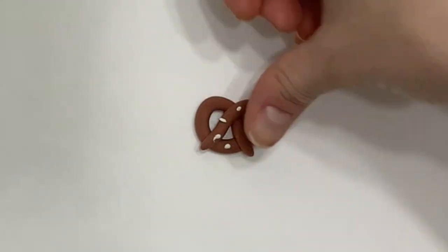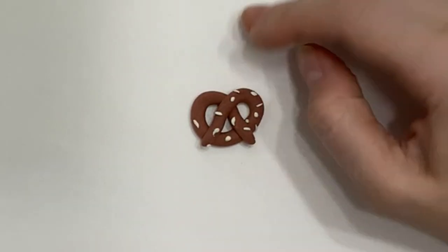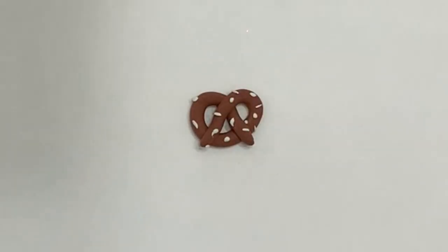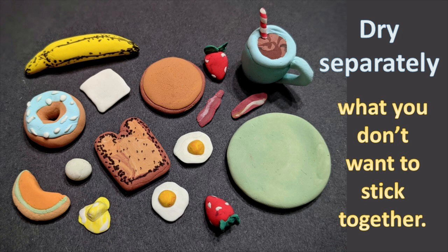For this reason, you'll want to be very careful when you add on pieces of Model Magic. The Model Magic sticks very quickly and may not easily be removed. Anything that you do not want to stick together should be dried separately on a piece of paper or paper plate for the next 12 hours.